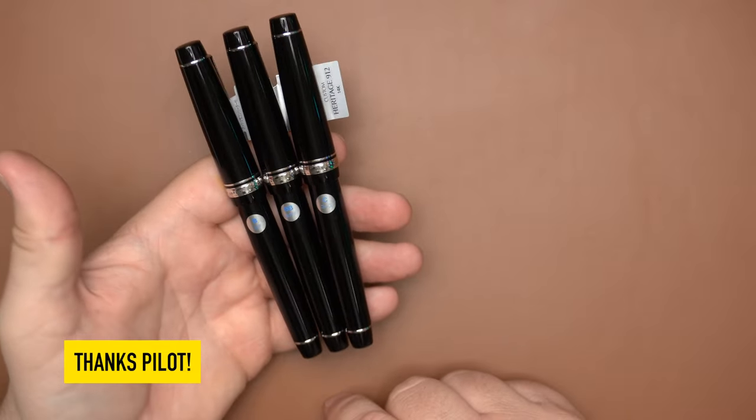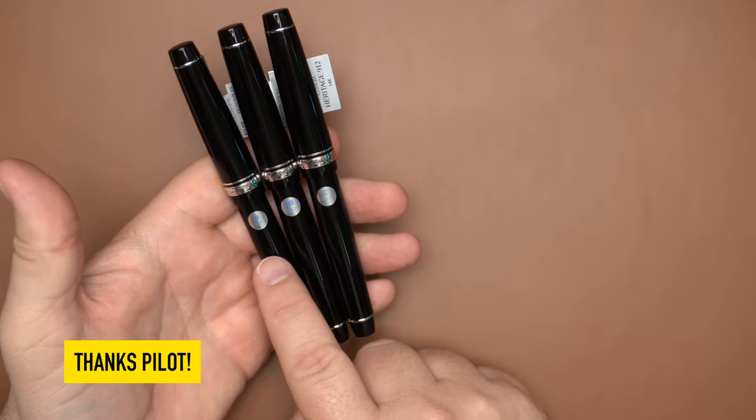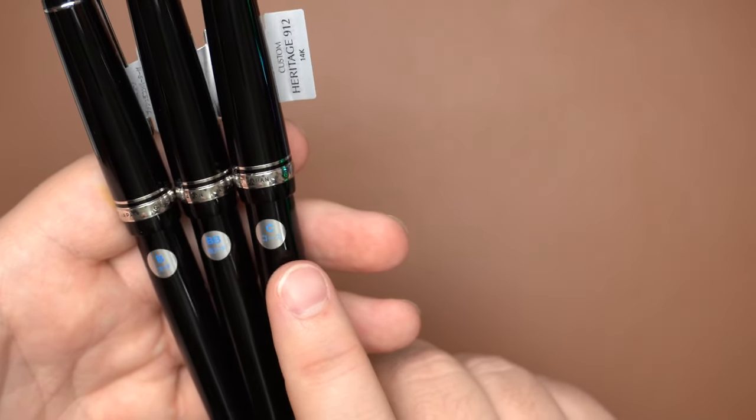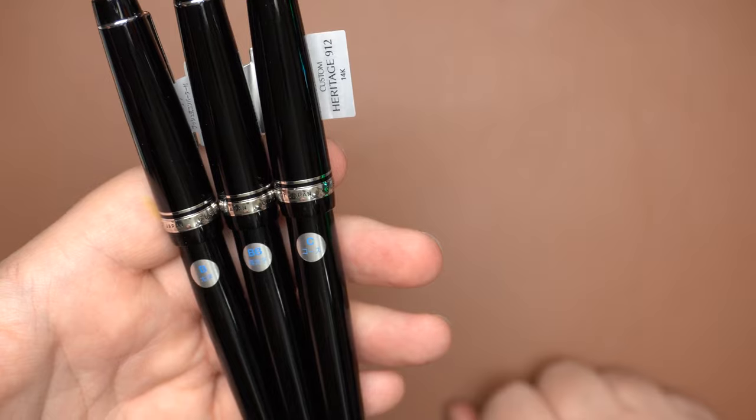So let's take a look at the big end of the spectrum here. I have pulled the broad nib, the double broad nib, and the extremely heckin' broad nib, the C or coarse nib, for our examination today.